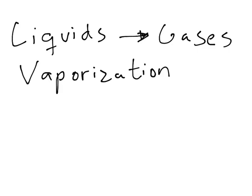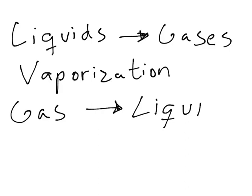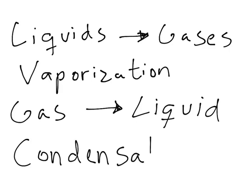The opposite of vaporization is when a gas goes to a liquid state, and the name of this process is condensation. An example you can see every day is when you have a glass of cold water — outside of the glass you can see moisture forming because of how cold it is. That is the gas molecules going into the liquid state, and when you touch it, it is wet. That is a simple example of condensation.